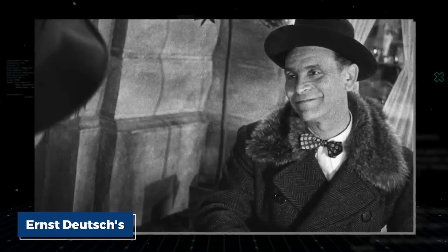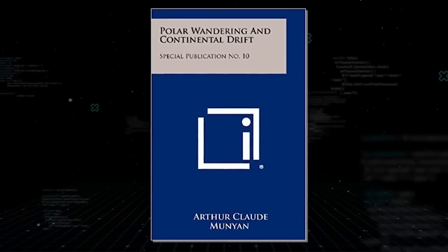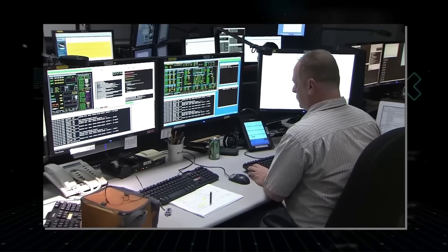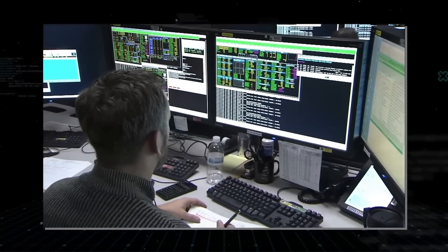In Path of the Pole, he discusses Ernst Deutsch's book, Polar Wandering and Continental Drift, in which Deutsch argues that pole shifts happen very slowly. However, Hapgood notes that Deutsch found evidence in Scotland of a crustal shift happening much faster than previously thought, potentially thousands or even tens of thousands of times faster.